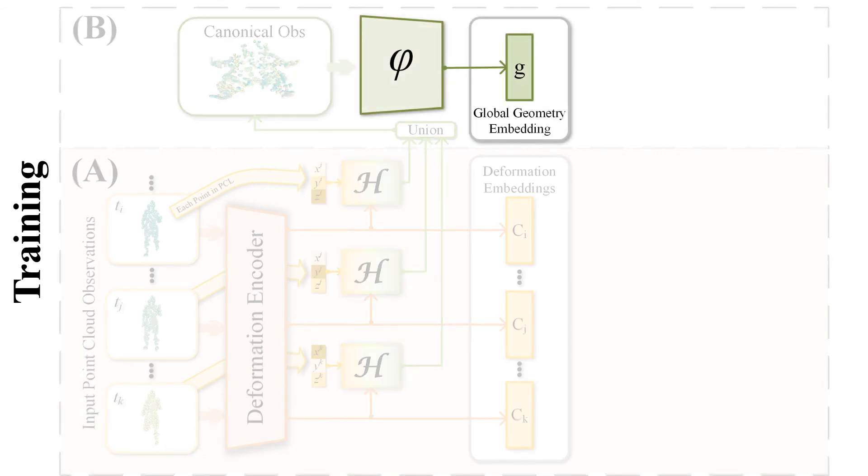The canonical observation point cloud is summarized to a global geometry embedding via a standard PointNet. Now the encoding part is finished, and we summarize the input as a set of per-frame deformation embeddings and one global geometry embedding.